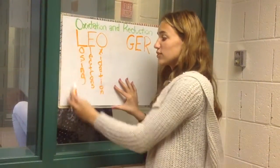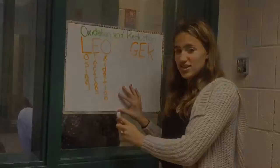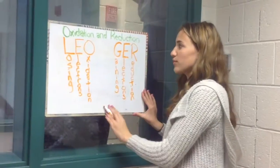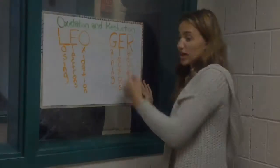To remember oxidation, we have the acronym LEO, which stands for Losing Electrons Oxidation. And to remember reduction, we have the acronym GER, Gaining Electrons Reduction.